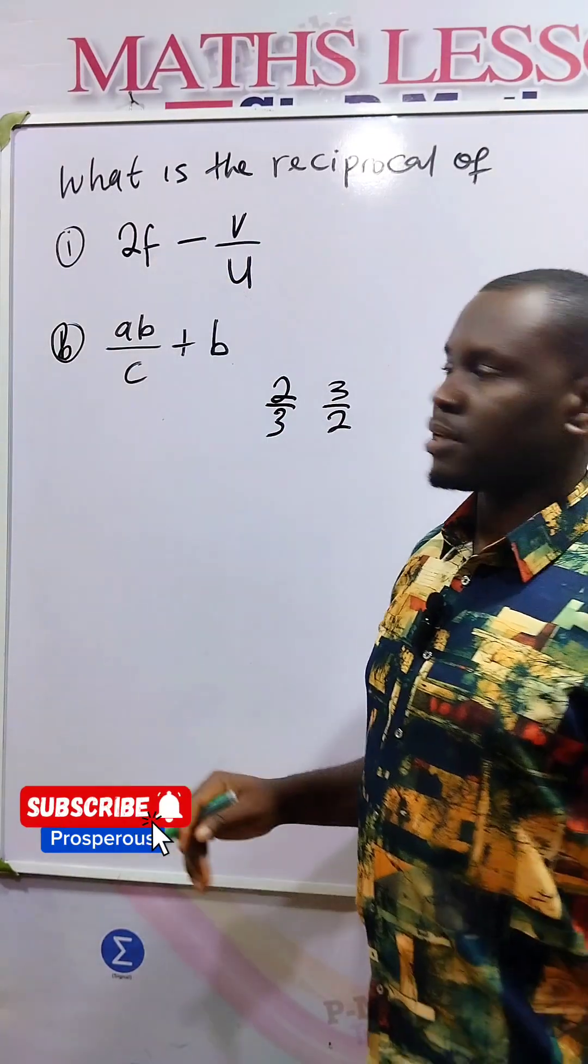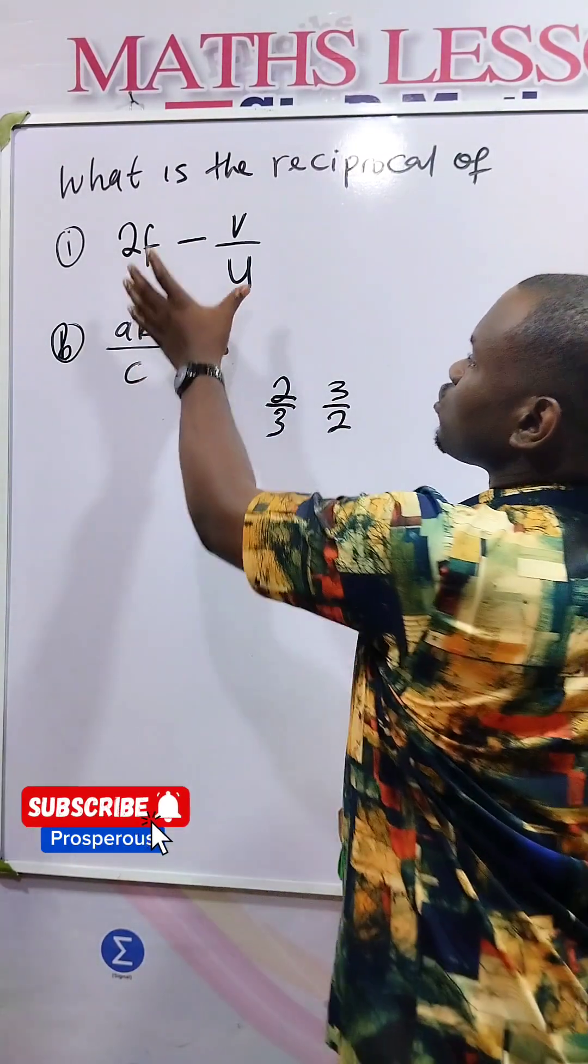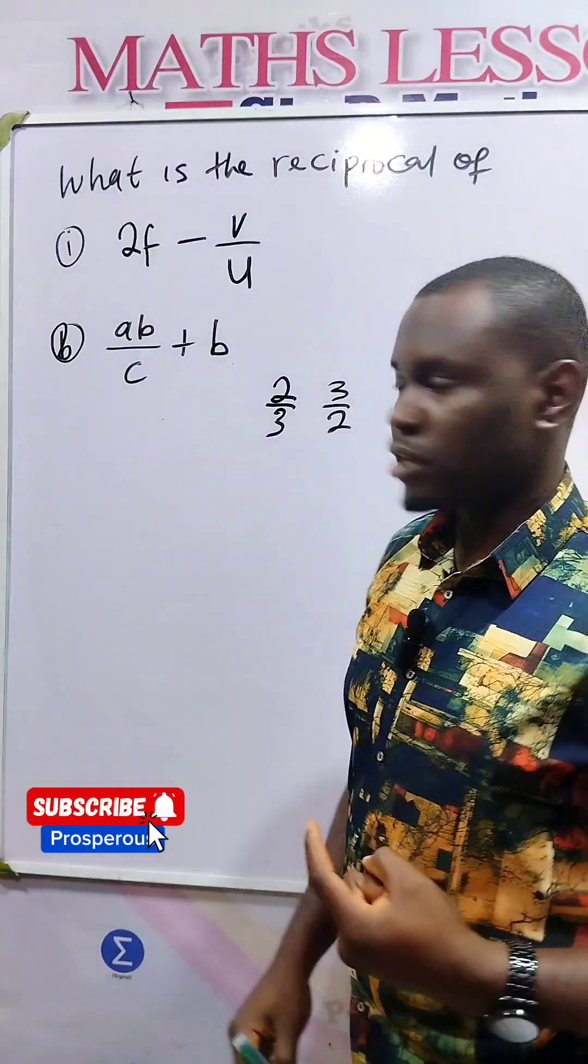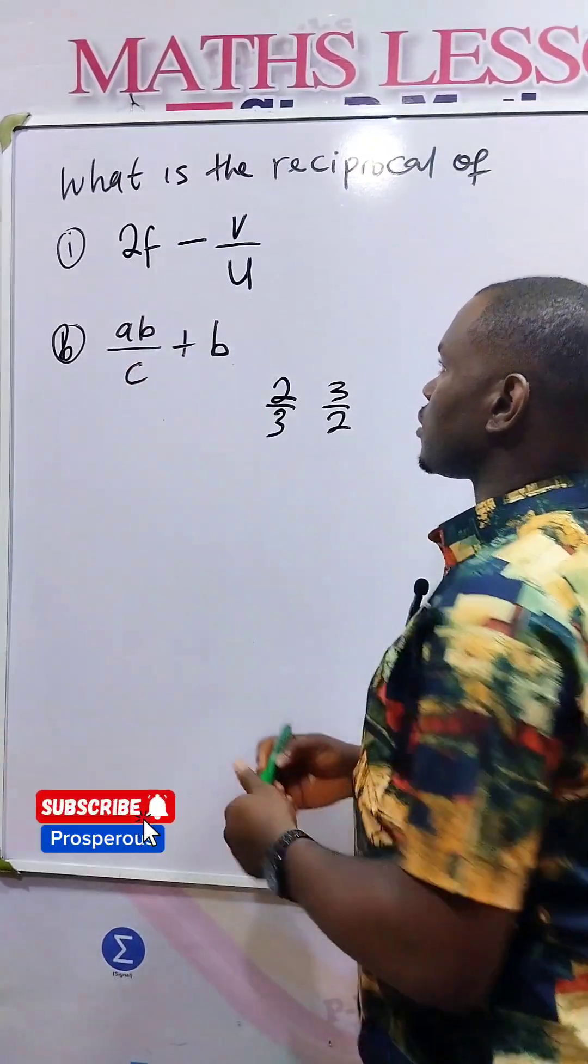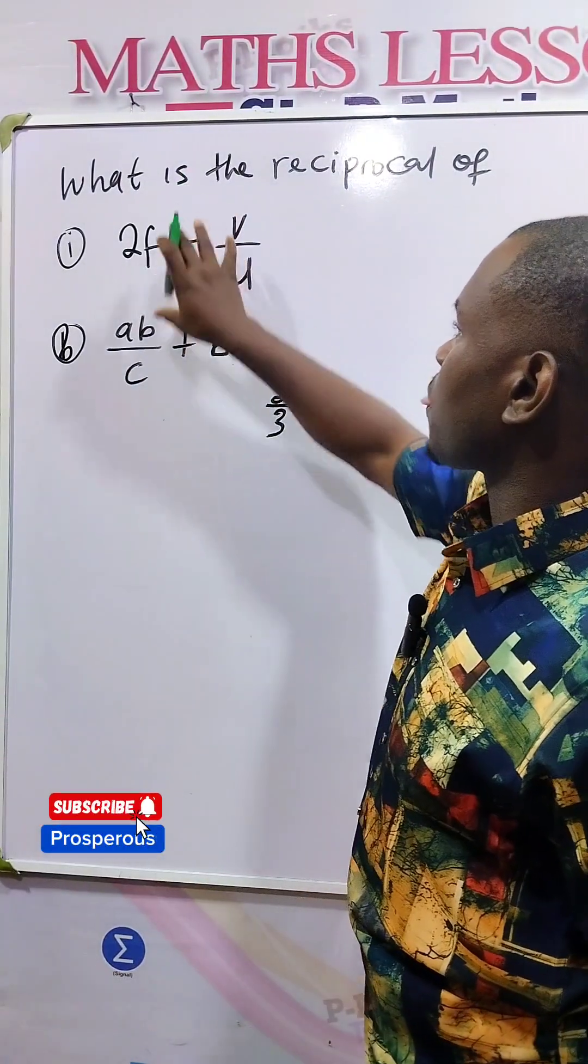Now how do we achieve this here? The first thing we do is to write the two fractions as a common fraction. The same thing will happen here. So to make these a common fraction,